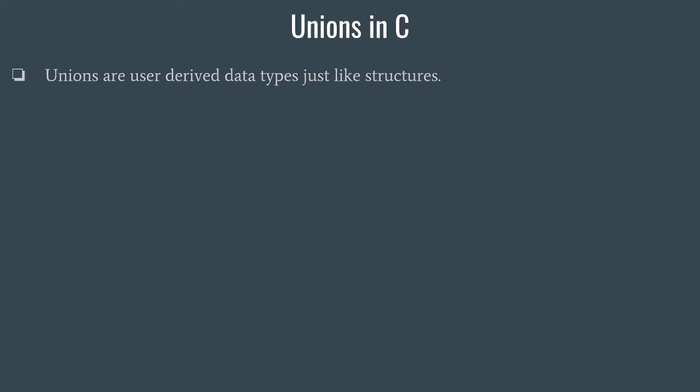We have already discussed about what structures are. Just like structures, unions are also derived data types and they are very much similar, except the only difference is that structures use distinct memory storages for all their member variables, whereas unions share the memory.